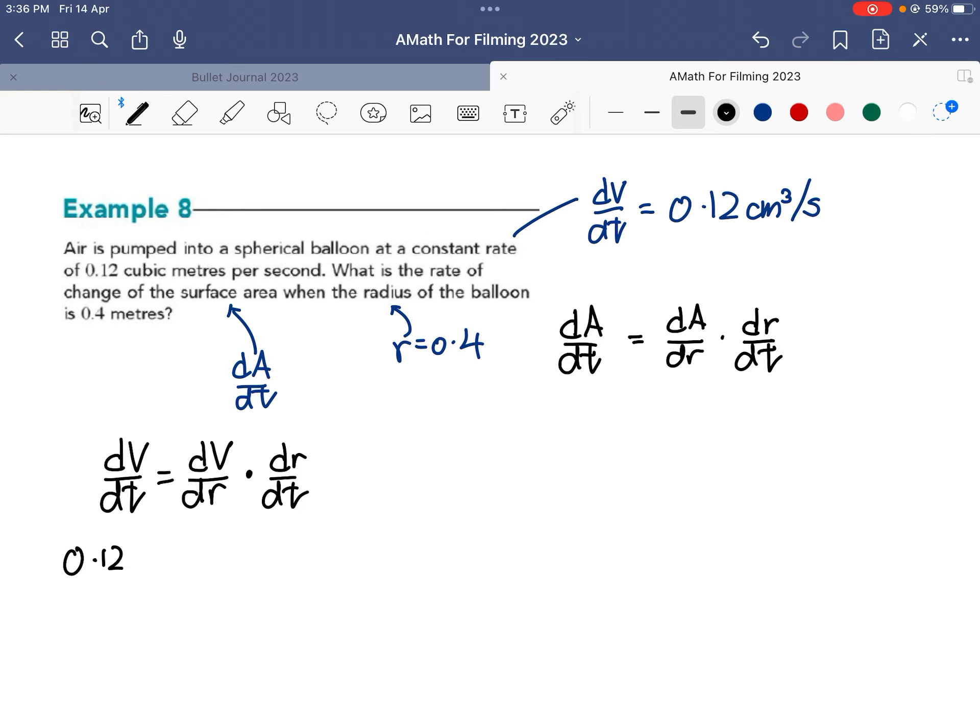dV/dr, how do I do dV/dr? Volume of a sphere is 4/3 πr³, so dV/dr is equal to 4πr². So here I can write it out as 4πr² times dr/dt.